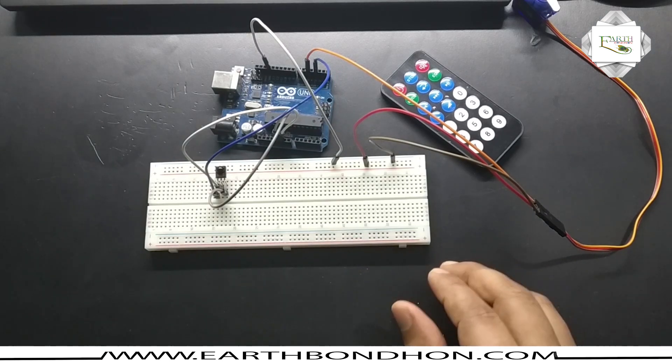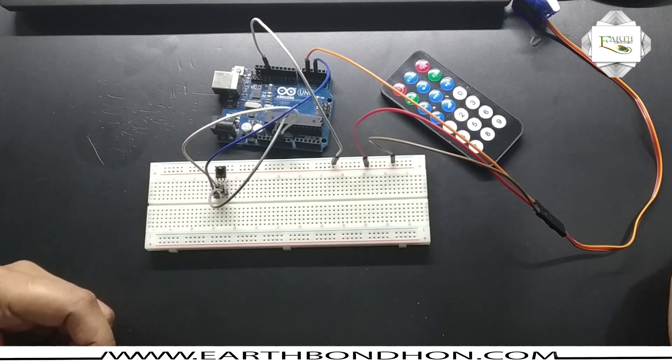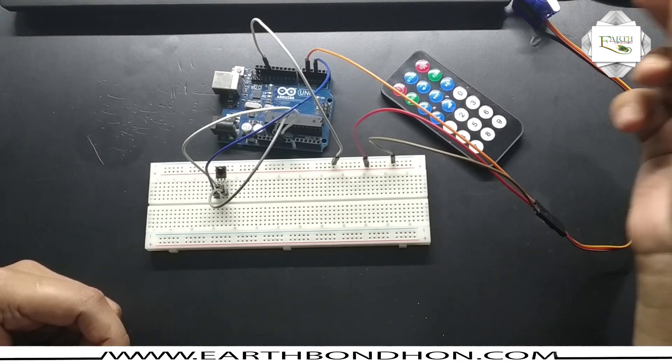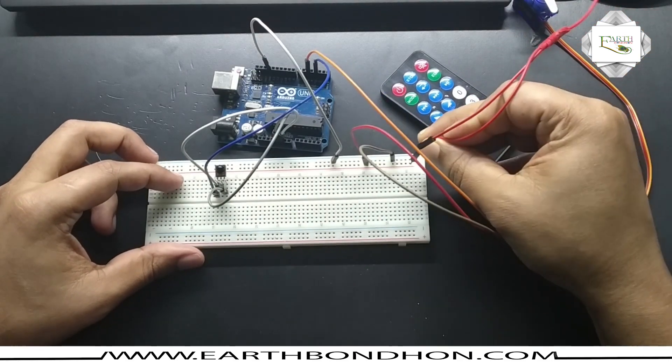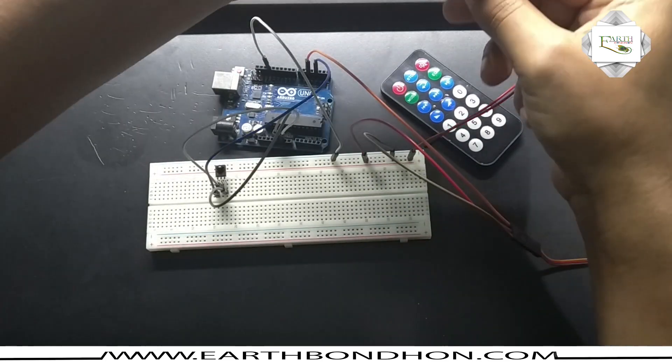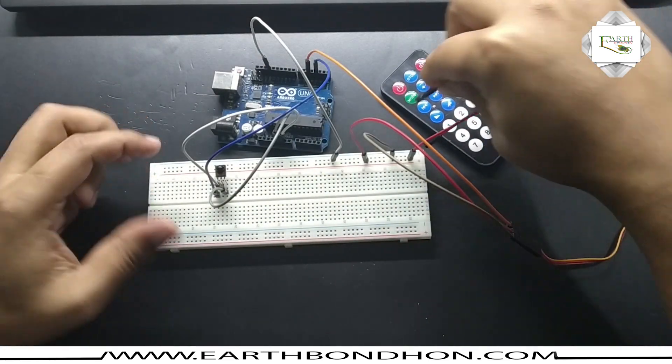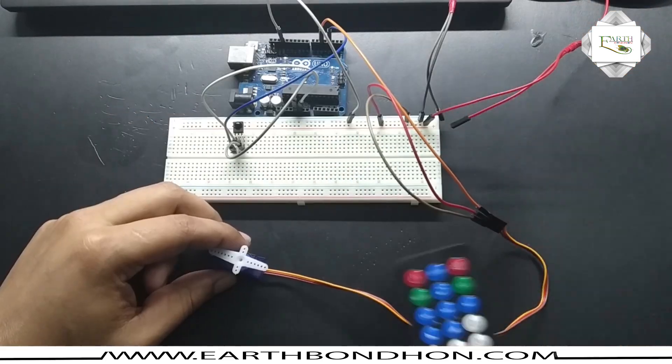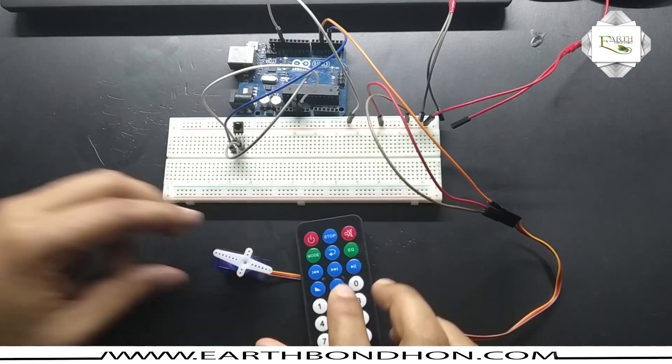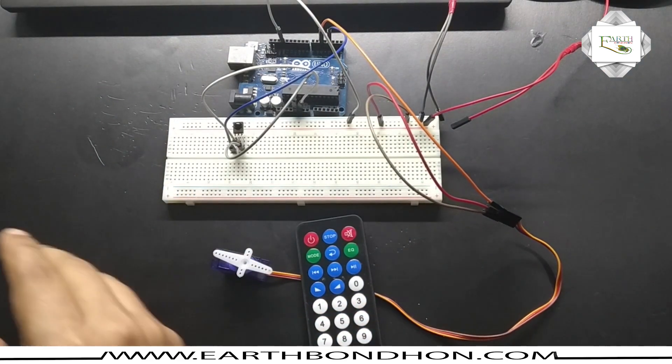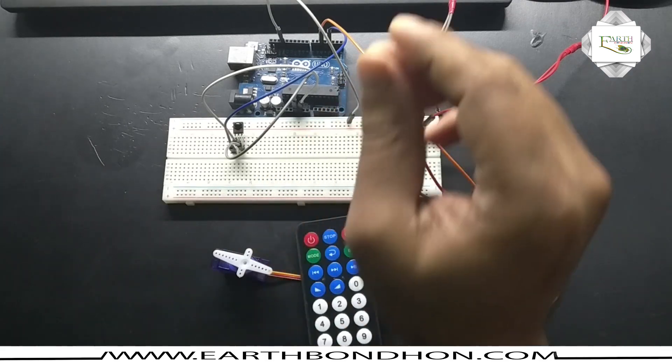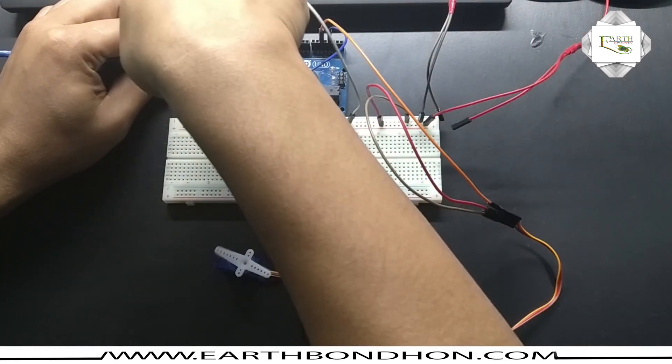I also need an extra power supply, five volts. This is five volt VCC and this is ground. Now I supply the Arduino with five volts.